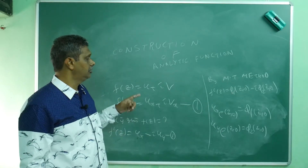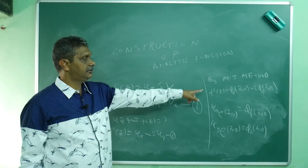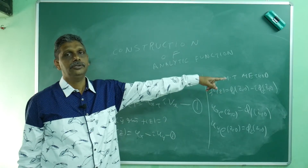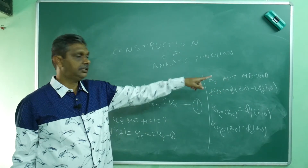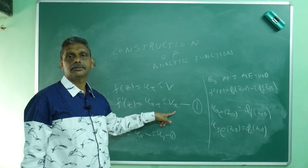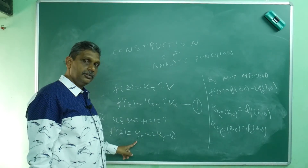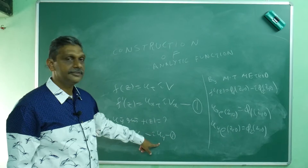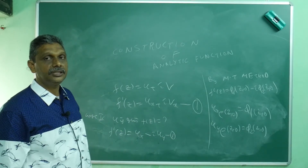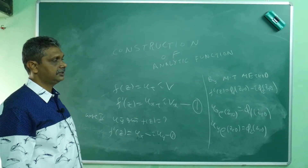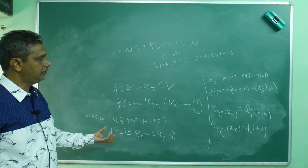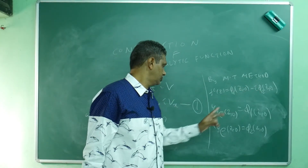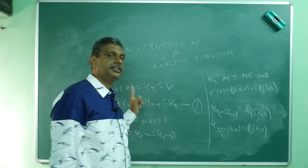In examination, when u is given, write f'(z) = φ₁(z, 0) - i·φ₂(z, 0), where φ₁ = ∂u/∂x at (z, 0) and φ₂ = ∂u/∂y at (z, 0). Then integrate f'(z) to get f(z). This line is very, very important.